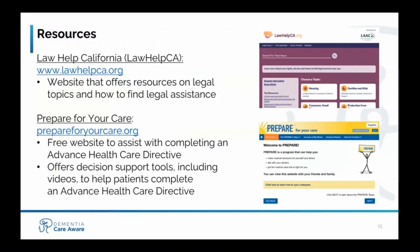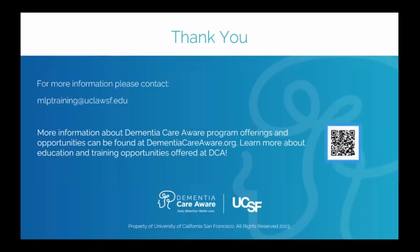Two resources to help guide people in completing advanced care planning documents: First, Law Help California — a website offering resources on legal topics and how to find legal aid, where people can search by county and topic to find the most relevant local resource. Second, Prepare for Your Care — a free website to assist with completing advanced healthcare directives, offering templates in multiple languages. Thank you for watching this training on advanced care planning. To learn more about the Medical Legal Partnership Network's education and training opportunities, please visit DementiaCareAware.org/MLP.